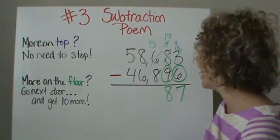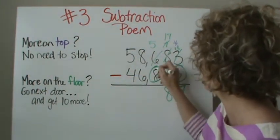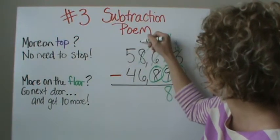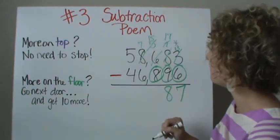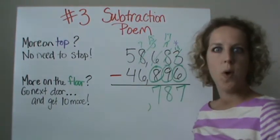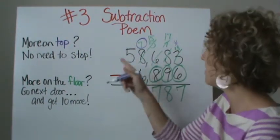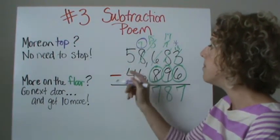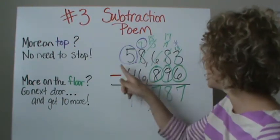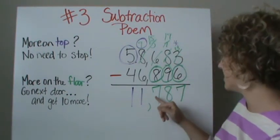Look at the next one: five minus eight. Is there more on the top or more on the floor? More on the floor again — a lot of regrouping. So go next door and take ten from that. Eight becomes a seven, and the five becomes fifteen. Fifteen minus eight is equal to seven. Then we have seven minus six — more on top, no need to stop. Seven minus six is one. Again, five minus four — more on top, no need to stop. Five minus four is also equal to one. So 58,683 minus 46,896 is equal to 11,787.